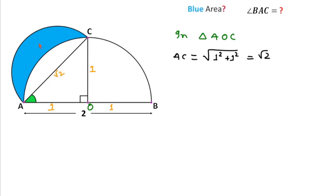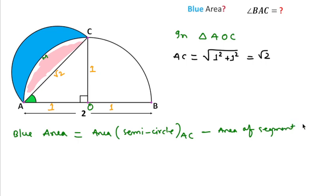Since we have to find this blue area, we can write blue area equal to area of semi-circle with AC as diameter minus area of segment AMCA, which is equal to area of this semi-circle.